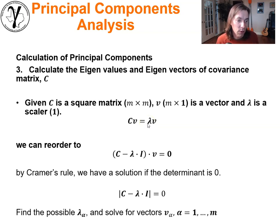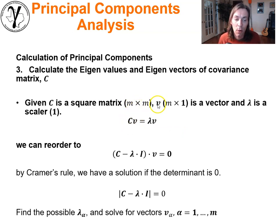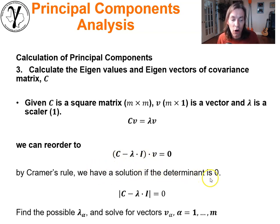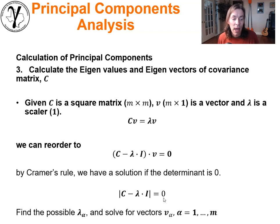We have an m by m covariance matrix, an m by 1 eigenvector, and lambda is a scalar. Rearranging using elementary linear algebra, and by Cramer's rule, we get a solution when the determinant of (C minus lambda times I) equals zero. We solve for the determinant equals zero to get the eigenvalues, then substitute back to get the eigenvectors associated with each eigenvalue.